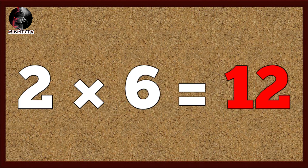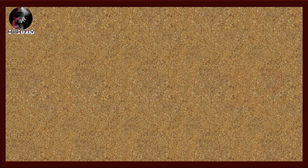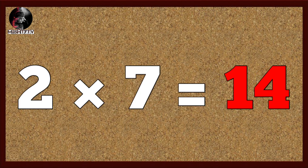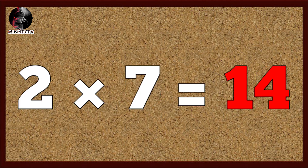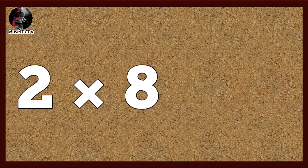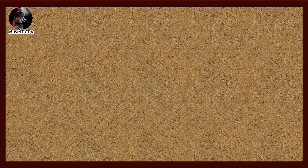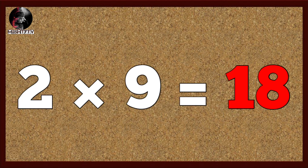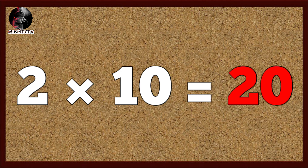Two six's are twelve, two seven's are fourteen, two eight's are sixteen, two nine's are eighteen, two ten's are twenty.